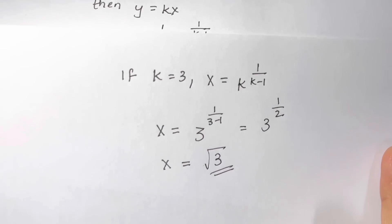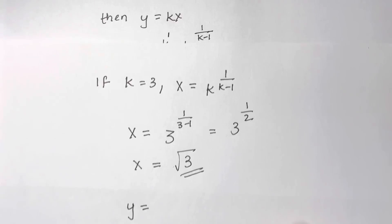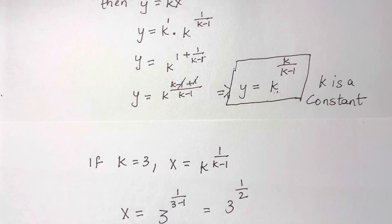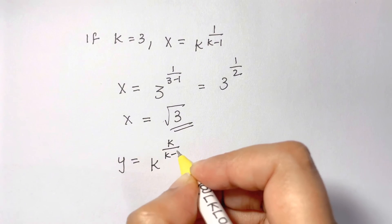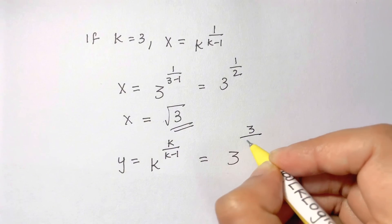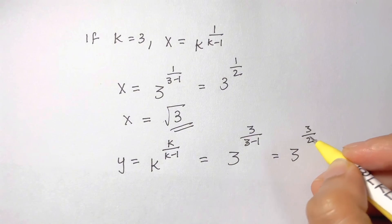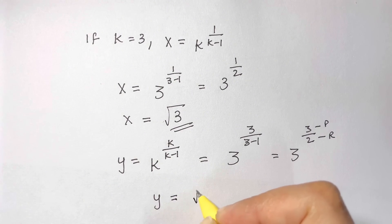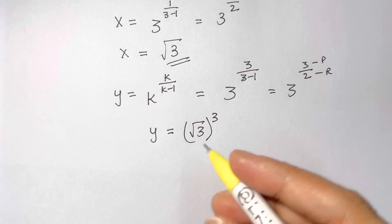Now let's find y. We have y equals k to the power of k over k minus 1. Substituting k equals 3, y equals 3 to the power of 3 over 2. Since the numerator is the power and denominator is the root, we can write y equals square root of 3, whole to the power of 3.